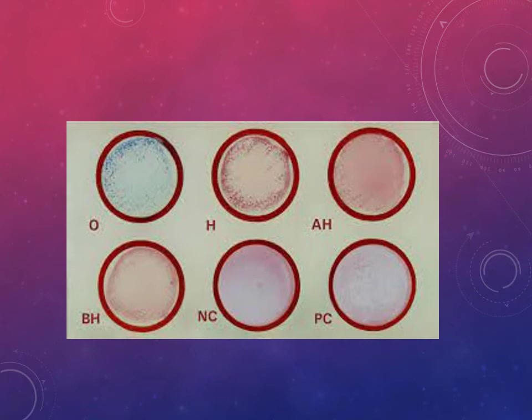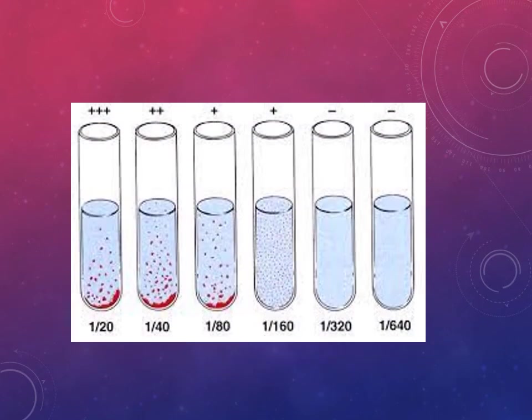In the test tube method, we do dilutions and can see the titer. For example, if the first, second, and third tubes are positive but the fourth tube shows only a very little bit, the titer is 1:160. The doubling dilution starts from a base - for example starting at 10, it goes 20, 40, 80, 160. This is how we read the titer.